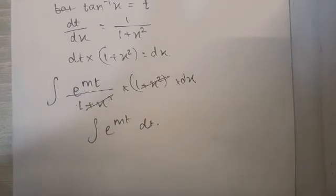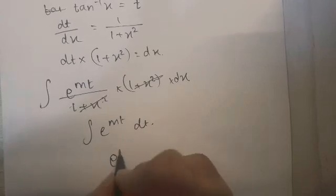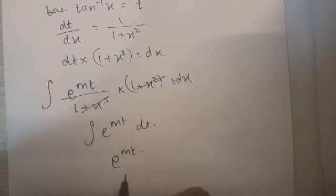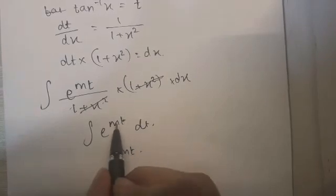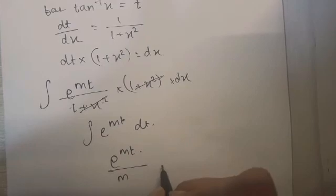And we know that the integration of e raised to anything is itself. So it's e raised to m into t and the coefficient of the variable should be in the denominator. So the coefficient of t which is m, it should be in the denominator plus c.